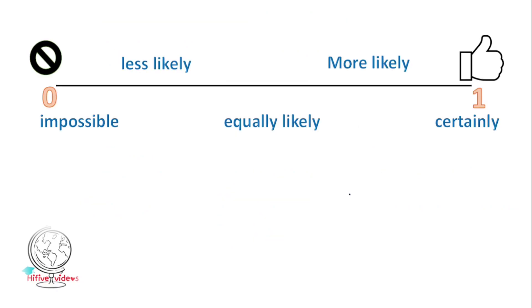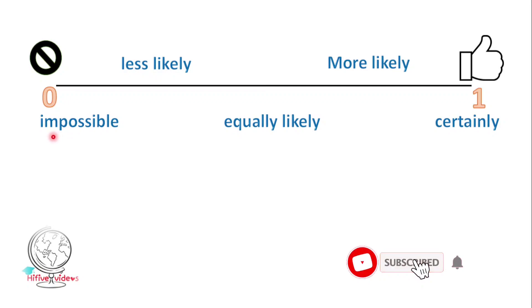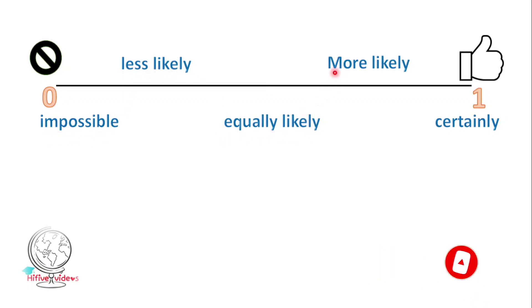Now we will find some important terms in probability. These terms are: impossible, less likely, equally likely, more likely, and certainly.